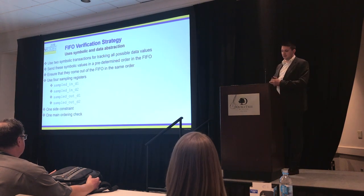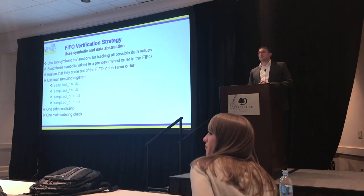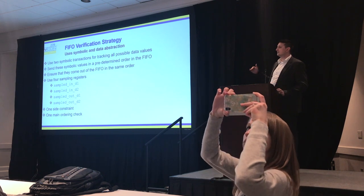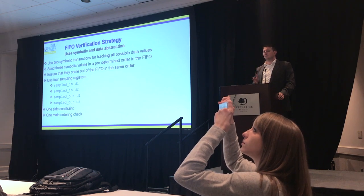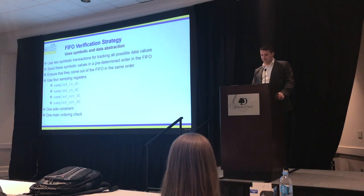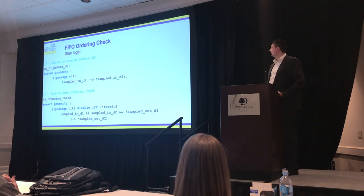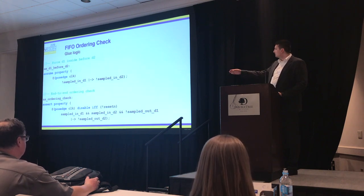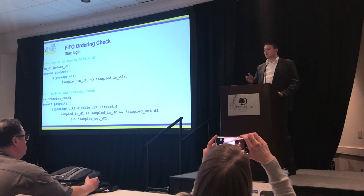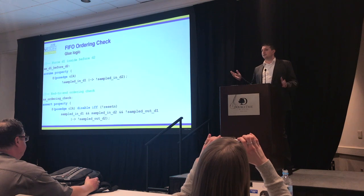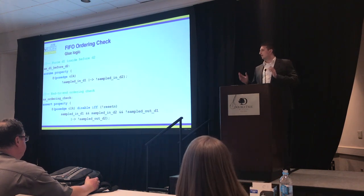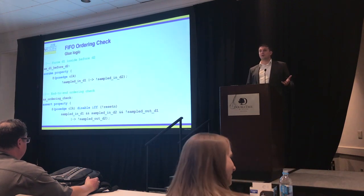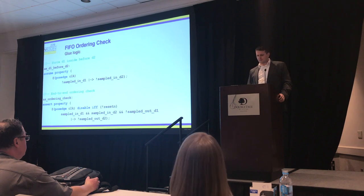If we start implementing some checks, let's take an order check and introduce some basic abstraction. We're going to sample two values — data one and data two — and make sure they exit the FIFO in the same order. The ordering check says: if data one wasn't sampled in, data two wasn't sampled in as well — that's our assumption. Then the ordering check says: if we've sampled both data one and data two and data one is not out yet, data two isn't out either. So they enter and exit the FIFO in the same order.